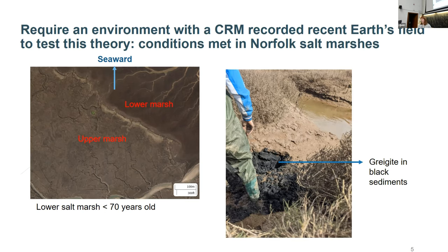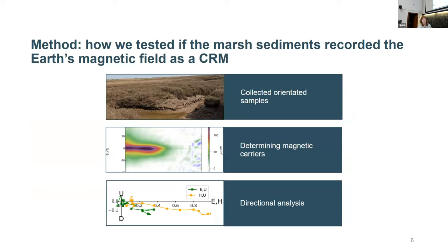The particular reason why this location was so great is that, looking at satellite imagery, these lower marshes have only existed with their present-day creeks and locations within the last 70 years or so - meaning we know we're recording the Earth's current field direction. To test this, we need to collect orientated samples in the field, check that we have magnetic minerals present in domain states that could reliably record and retain magnetic remanence, and do our directional analysis to check that the directional information is stable and aligned with the Earth's magnetic field.